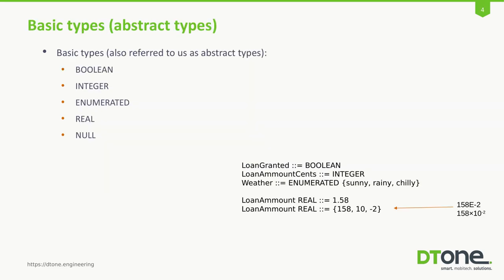Basic types, as you would imagine: we have booleans, integers, enumerated, etc. Enumerated are basically specified keywords or values, as you can see in the example. You also have real numbers, where the reals can be written in the way of exponent and mantissa.